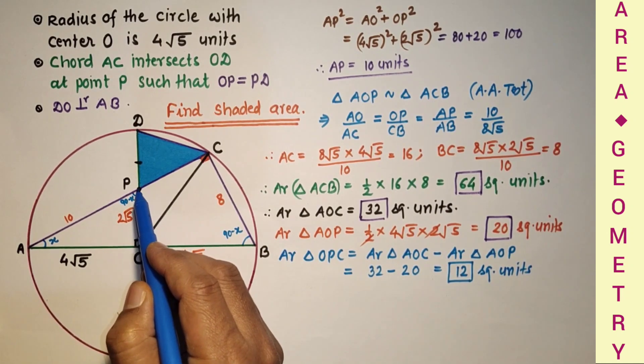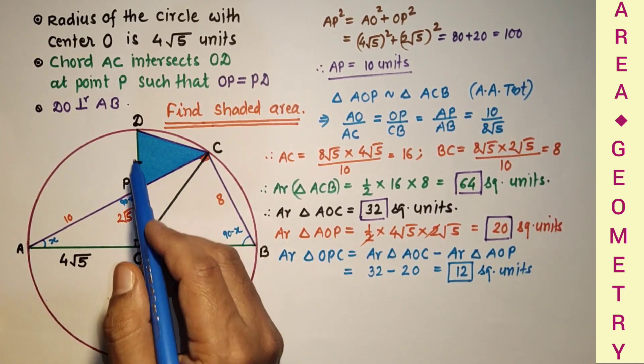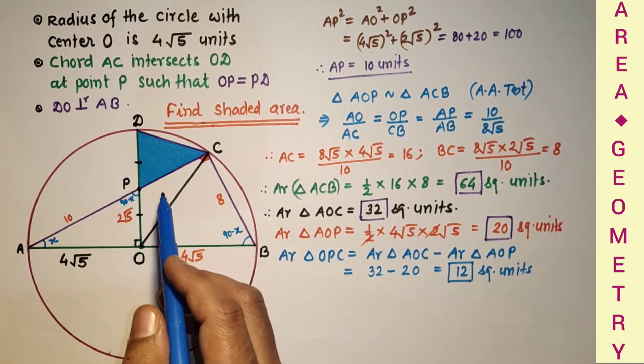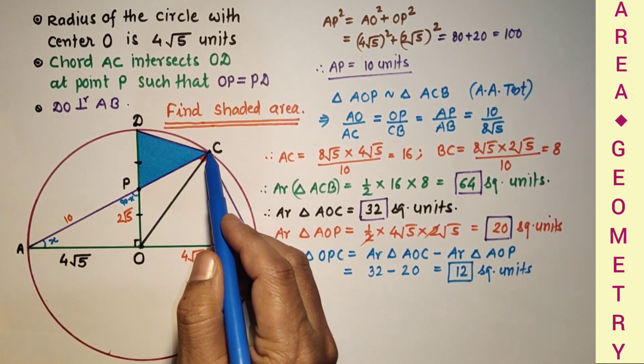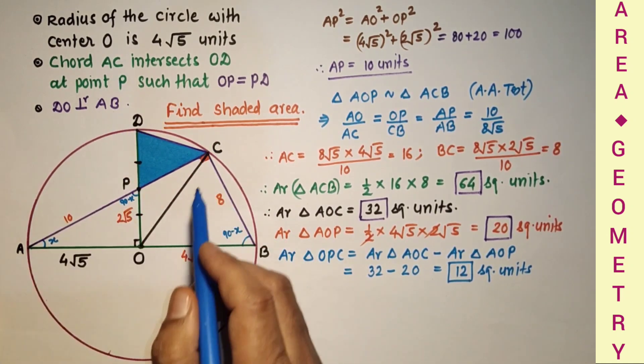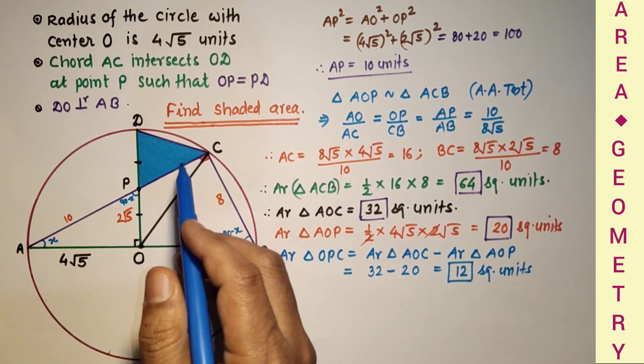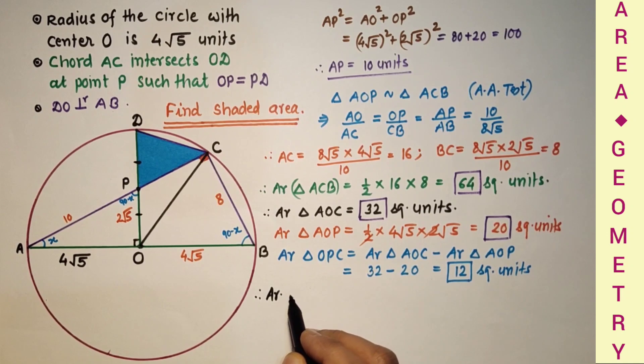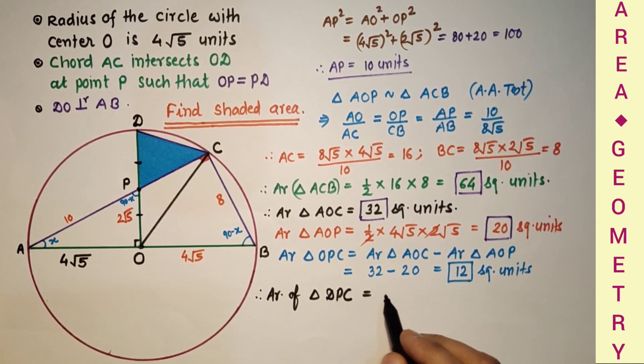Now since P is the midpoint of this base OD, so CP is median. Median divides a triangle to two triangles having equal area. It means triangle CPO is equal to area triangle CPD, which is 12 units. Area of triangle DPC, shaded area, is equal to area triangle OPC.